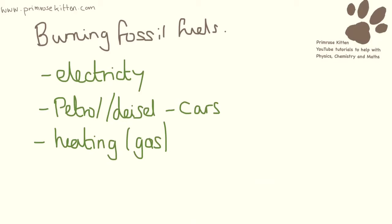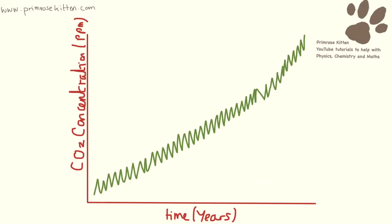Are there alternatives, and what is the consequence of burning all of these fossil fuels? Here is a graph showing time in years and carbon dioxide concentration in the atmosphere. You can see that it is going up. There is a yearly variation, and this is to do with the seasons and the amount of plants around, because plants take in carbon dioxide. But there is a very, very clear trend that over time, the levels of carbon dioxide are increasing.